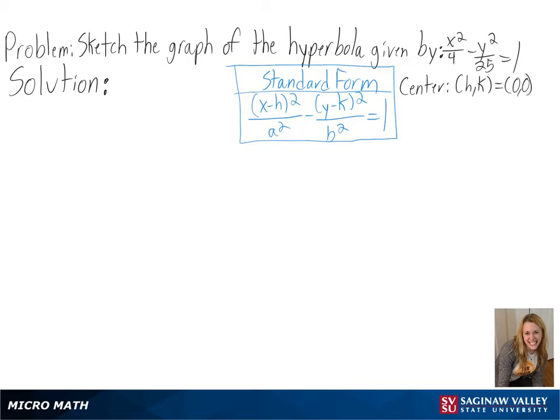Next we need to figure out a and b since they will determine our vertices. For a we get 2, so we will be going left and right 2 units, and for b we get 5, so we will be going up and down 5 units.